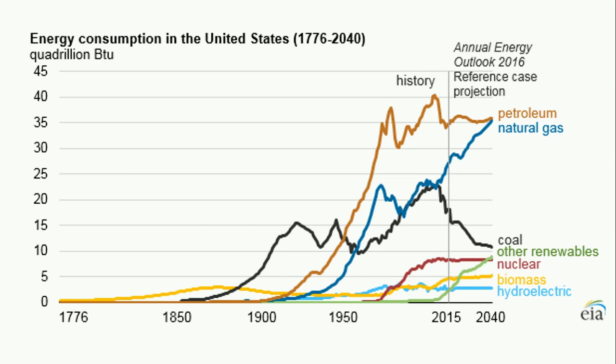During the first century the U.S. was founded, biomass was the primary form of energy consumption as settlers were burning lumber for warmth. Coal consumption increased through the Industrial Revolution, and petroleum and natural gas increased with the rise of petroleum-fueled transportation.